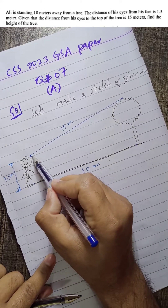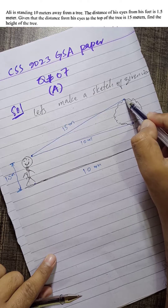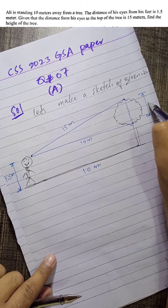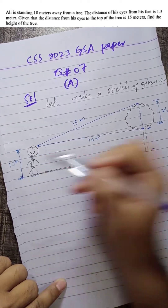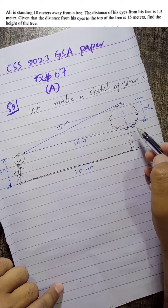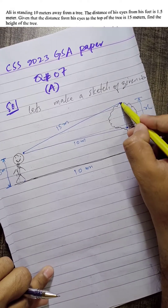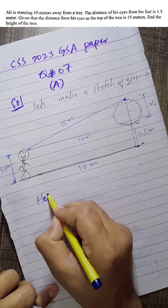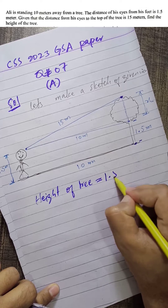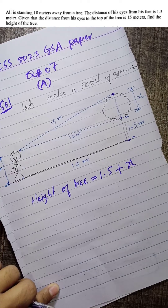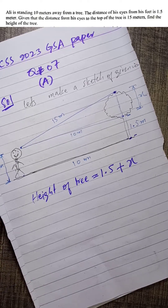The horizontal distance from Ali to the tree is 10 meters, and that same 10 meters applies at the base level as well. We don't know the vertical distance from Ali's eye level to the top of the tree — let's call it x. The height of the tree will be equal to 1.5 meters plus x. If we find x, we will get the height of the tree easily.